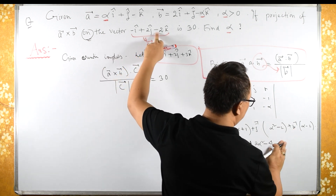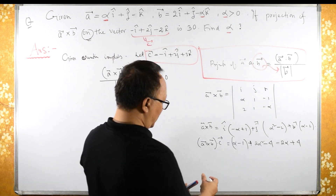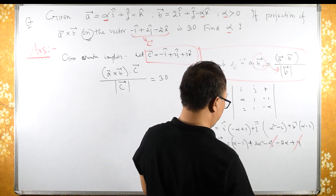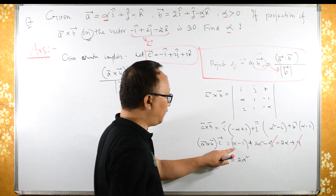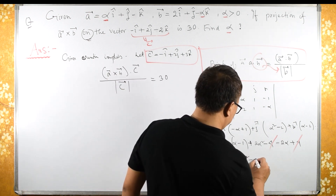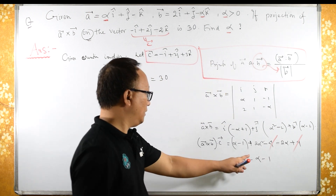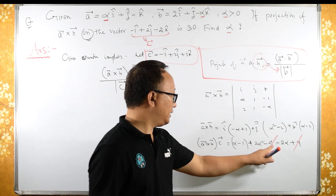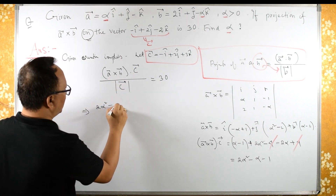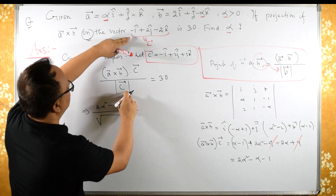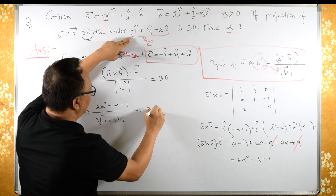Now taking a cross b dot c: we multiply each component of a cross b by the corresponding component of c. For the j term we have 2·(−α² + 2) = −2α² + 4, and for the k term −2·(α − 2) = −2α + 4. The magnitude of c is √(1² + 2² + 2²) = √9 = 3.